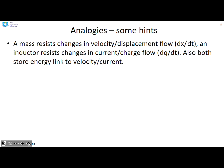Analogies then. A mass resists changes in velocity or displacement, and you'll know that because we have the equation f equals m dv/dt. An inductor resists change in current or charge flow, and you'll know that because we have the equation v equals L di/dt. So you see both of these have got this derivative term in them, and so those two terms are analogous. They resist changes in the flow rate.